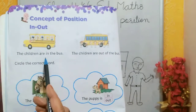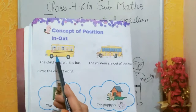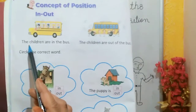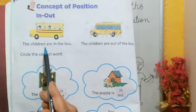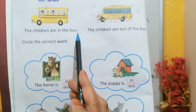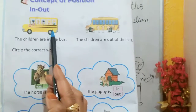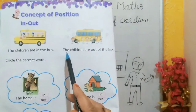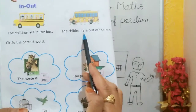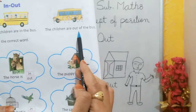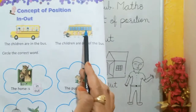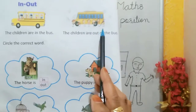The children are in the bus. Now look here — the children are out of the bus. Bacchay bus se bahar hain. Understanding.